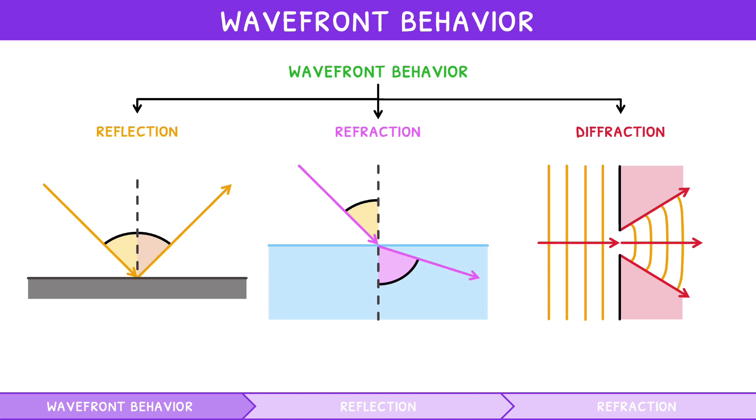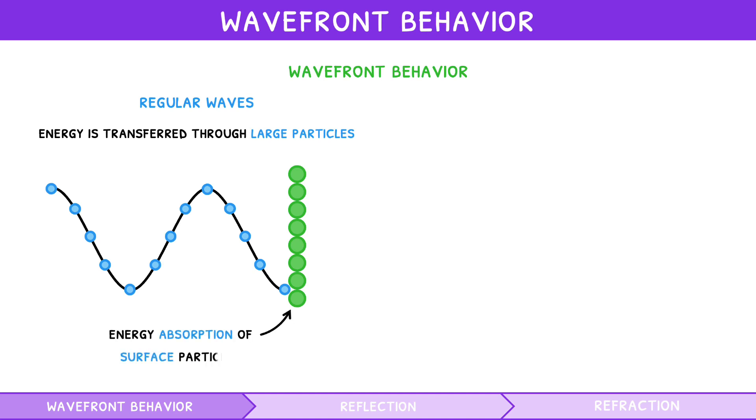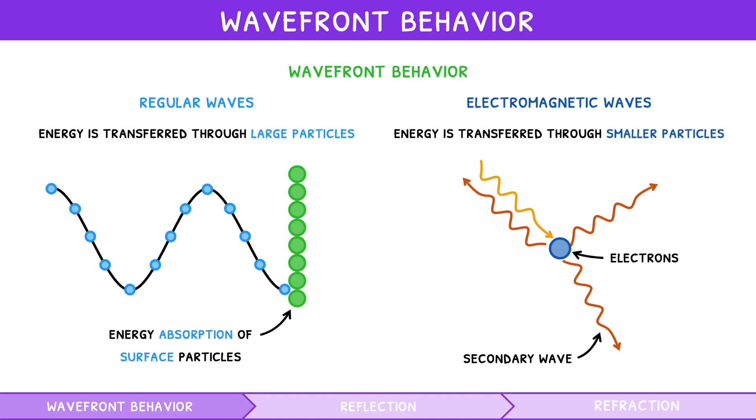Before detailing each of these processes, it is important to understand an important difference in the mechanics of reflection and refraction within electromagnetic waves. In most waves, energy is transferred through large particles. As a result, the energy absorption properties of surface particles cause reflection and refraction patterns. However, in electromagnetic waves, energy is transferred through smaller particles, electrons. Each electron oscillates in place and re-emits a secondary wave, thus becoming a new wave source. As a result, the interference patterns of these emitted waves cause reflection and refraction patterns. Regardless, both mechanisms involve wave interference and so can be described by their wavefront behavior.